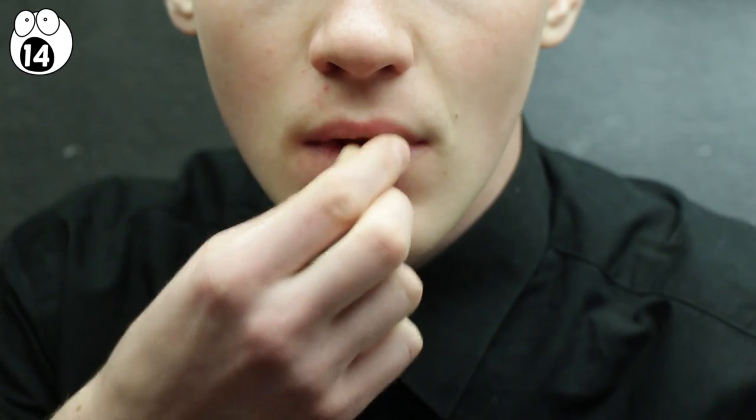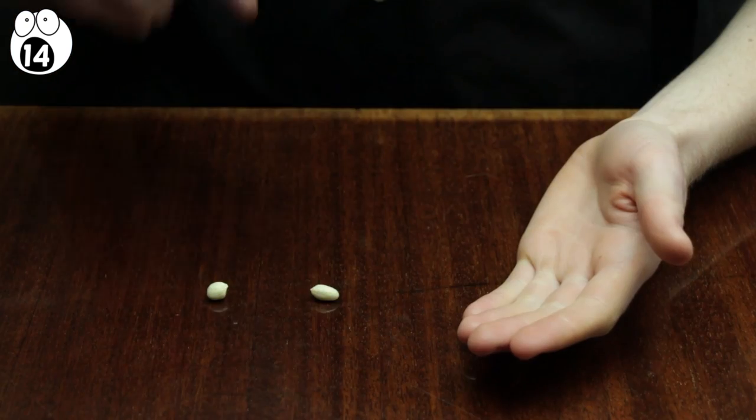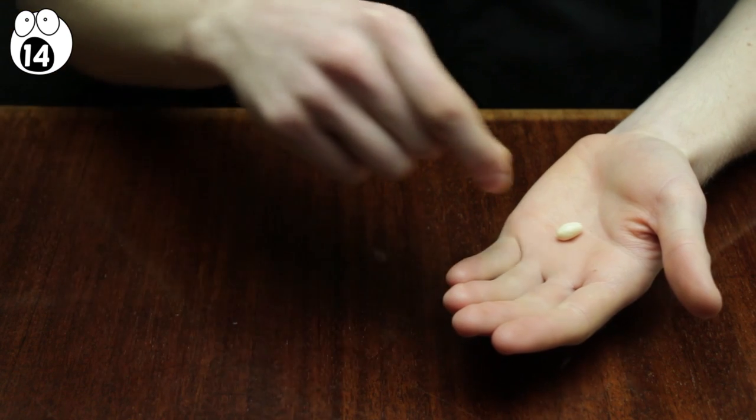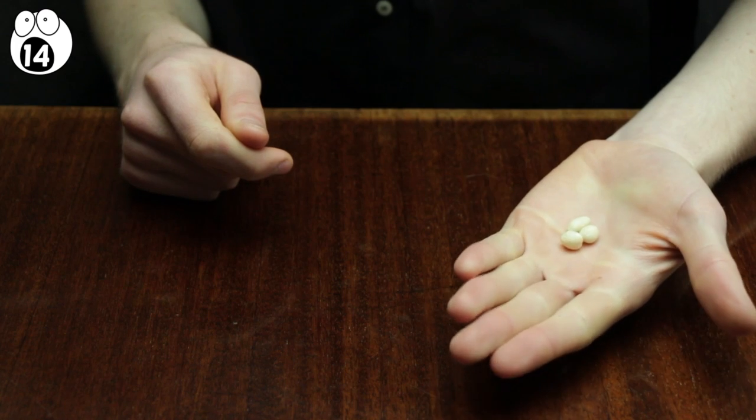As you perform the trick, eat the first peanut, or hide it in your pocket if you're allergic to nuts. Next, place the second peanut into the other hand, and finally, when you place the third one into your hand, let go of the palmed nut. Your friends will go nuts trying to figure this one out.